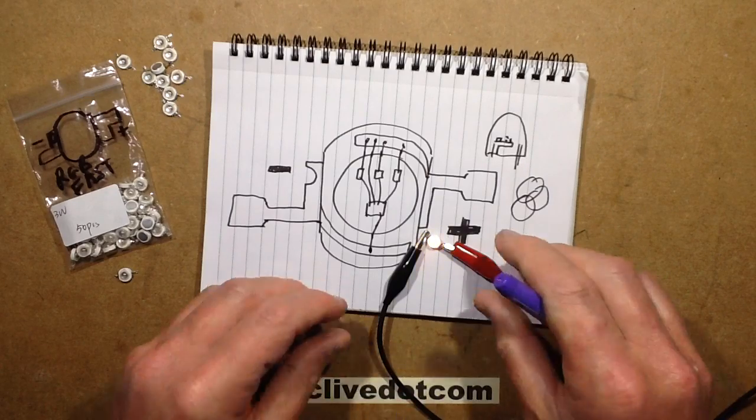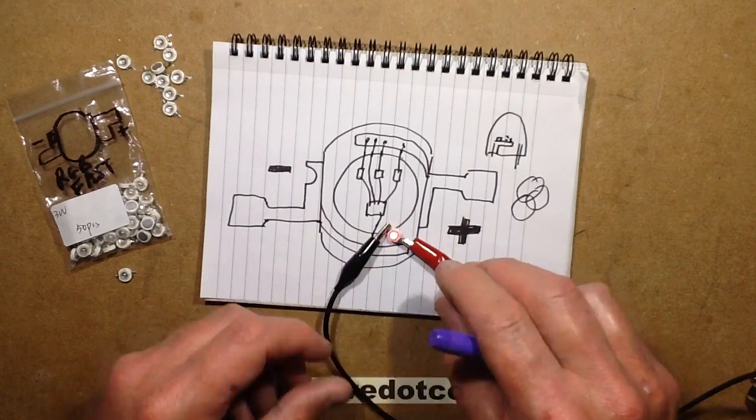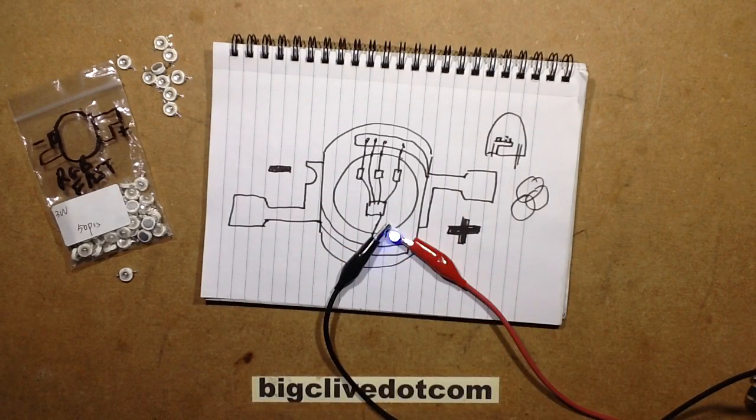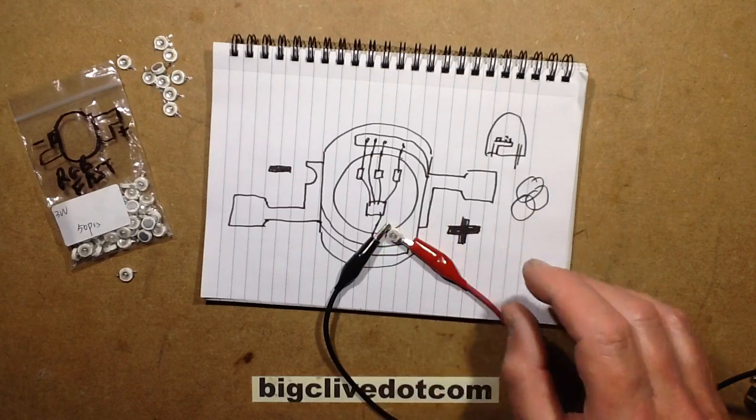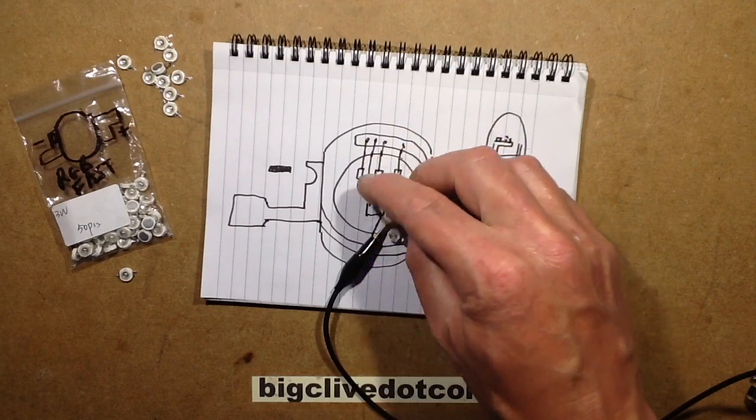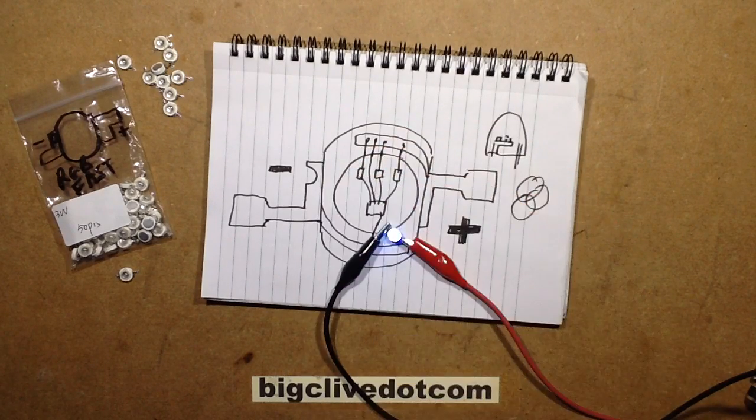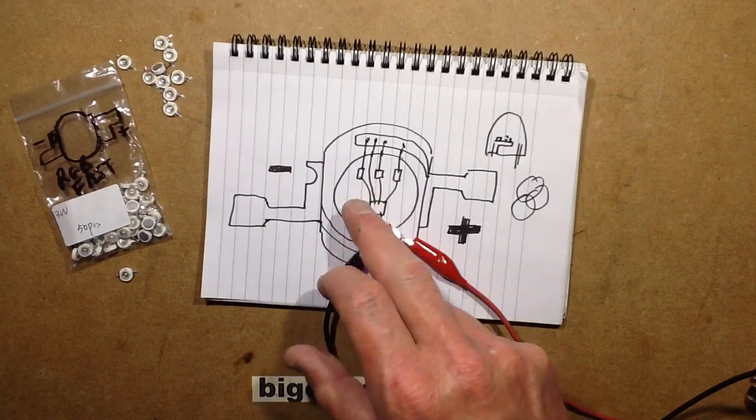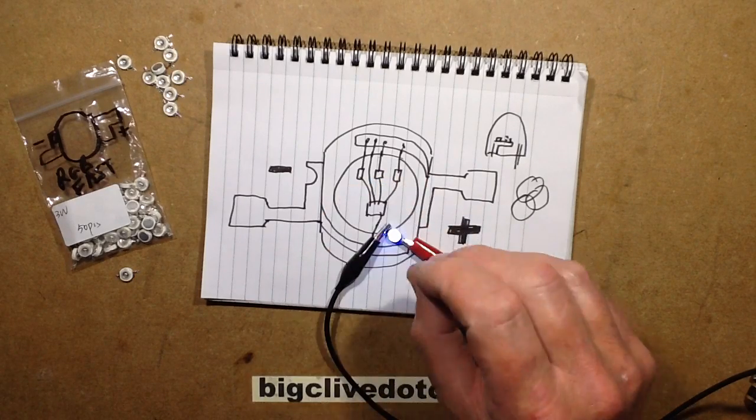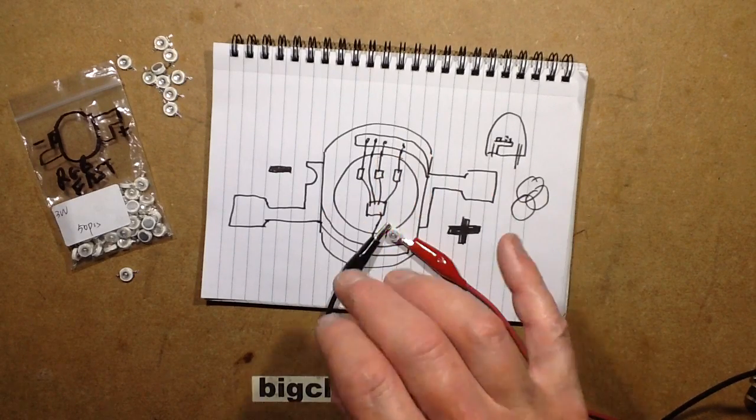With this one it does project a fairly consistent beam. There is a pattern. Presumably the pattern is caused by the fact that the gold bond wires jump across and it's kind of casting a slight reflection. And also the red versus the green and blue, they tend to have different sort of light distribution patterns.